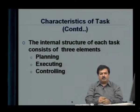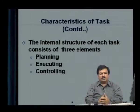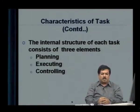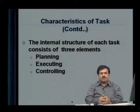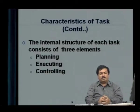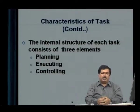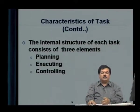Whatever model one uses, the characteristics of a task basically involve three elements — the internal structure of each task. There is planning: what tools, resources, and effort are required. Second is executing: the time, quality, application of skill, knowledge, and expertise required. Third is controlling: controlling cost, controlling fineness, controlling speed, and many other aspects. Planning, executing, and controlling are the basic three elements of any task and that is its internal structure.